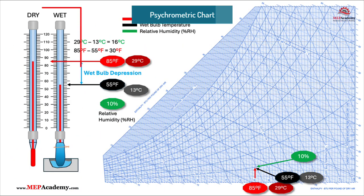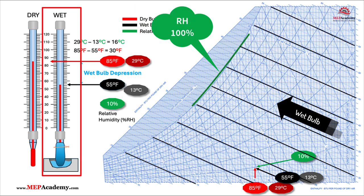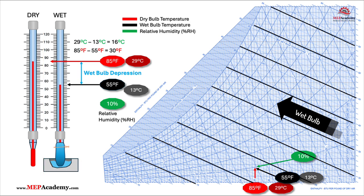Wet bulb temperature is the temperature a parcel of air would have if cooled to saturation — 100% relative humidity — by evaporation. The wet bulb temperature will always be lower than or equal to the dry bulb temperature because evaporation absorbs heat. It's measured by wrapping a wet wick around a thermometer bulb and allowing evaporation to cool the bulb, with the resulting temperature reflecting the cooling effect of moisture in the air.